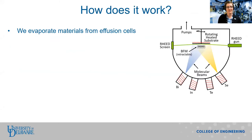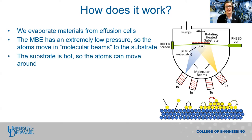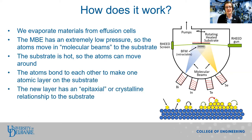So how does MBE actually work? Let me give you an overview of the system. What we do is we evaporate materials from effusion cells. These atoms move in molecular beams toward the substrate. The pressure of the MBE is so low that the atoms don't run into anything on their way to the substrate. The substrate is hot, so the atoms can diffuse around on the surface. The atoms then bond to one another and to the substrate, forming one layer of atoms. The new layer has a crystalline or epitaxial relationship with the substrate, hence the term molecular beam epitaxy.